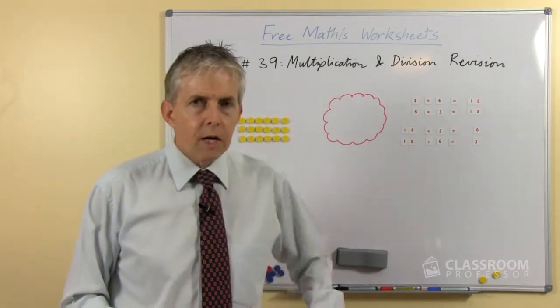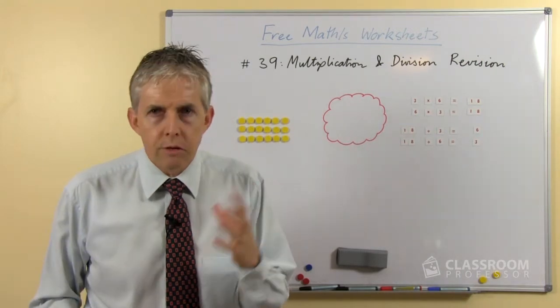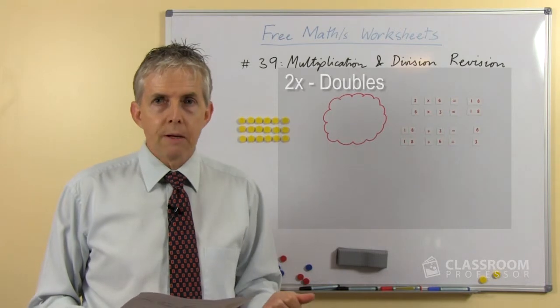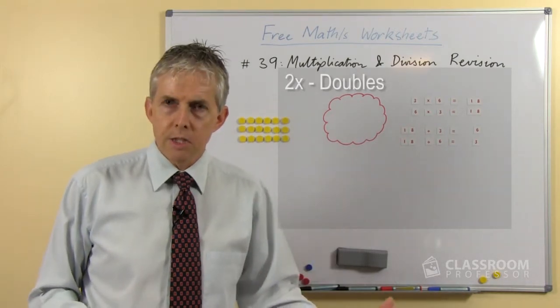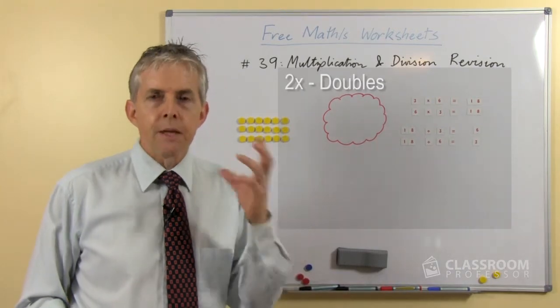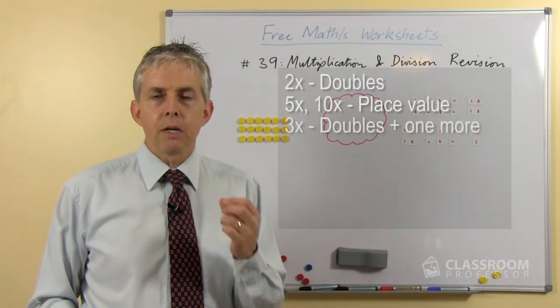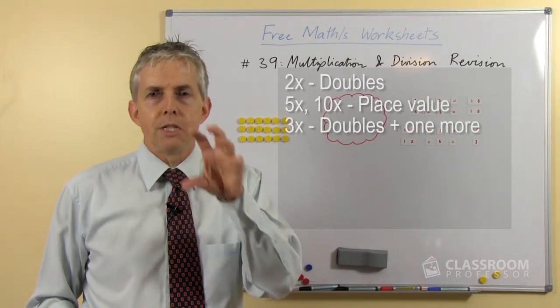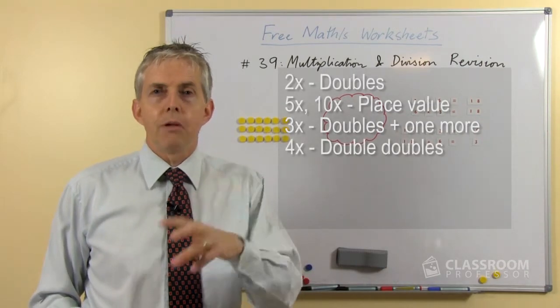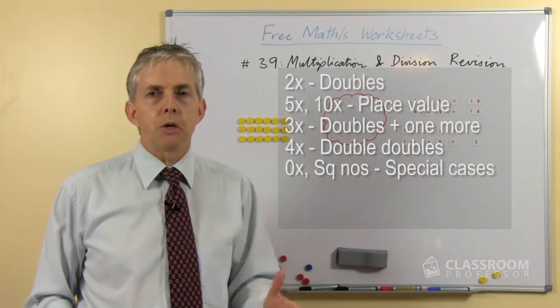Just to quickly go over the strategies that are part of our scheme or the scheme that we recommend. We have double, so the 2 times number facts, and of course for each one of these there's the division inverse facts as well, so dividing by 2. Multiplying by 5 and 10 based on a place value strategy. Multiplying by 3 where we start with a double of a number and then add one more. Multiplying by 4 which is double and then double again. Special cases of 0 and square numbers.